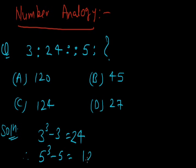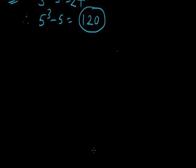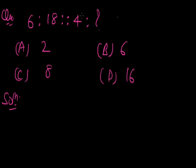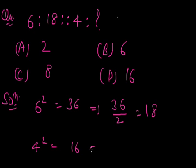Next question: 6:18::4:? Here option A, 2. Option B, 6. Option C, 8. Option D, 16. Here solution: relation between 6 and 18. Here 6 into 3 is 18, then 4 into 3 is 12, but option 12 is not there. So we think about other relation. Then 6 square, that is 36, and 36 divided by 2 is 18. Then 4 square is equal to 16, then 16 divided by 2 is equal to 8.